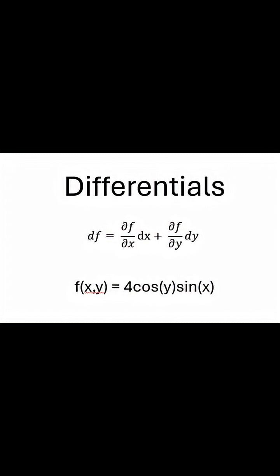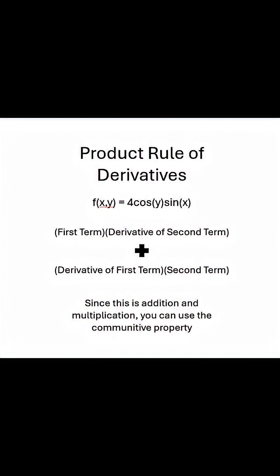f(x,y) equals 4cos(y)sin(x). Before we get into it, I'm going to quickly go over the product rule of derivatives. Take the first term times the derivative of the second term, plus the derivative of the first term times the second term.